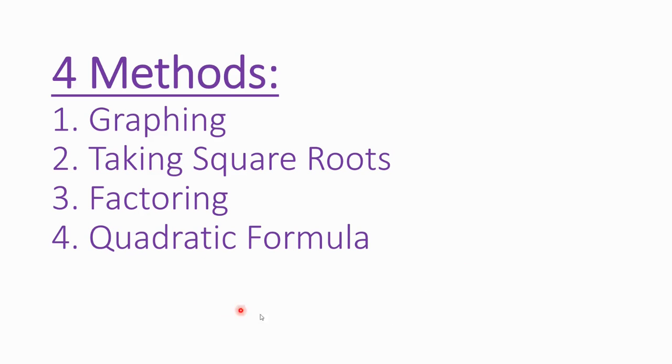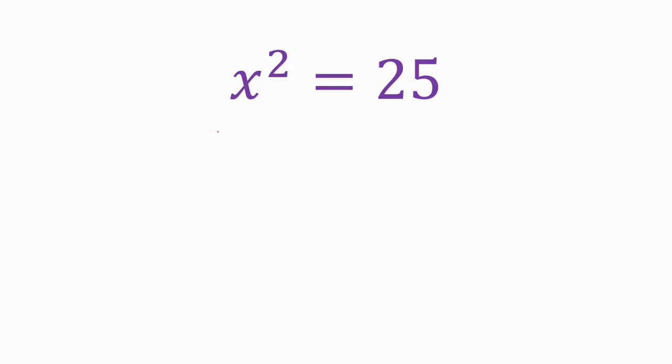Remember, we talked about how there were four methods. We already did graphing. We are doing this one now — taking square roots of both sides. So here's what it looks like.